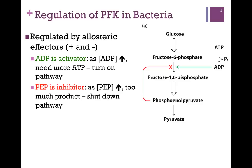You can imagine that ATP is probably an inhibitor. We also find that phosphoenolpyruvate, one of the downstream products of the pathway — the product directly in Step 9 — is an inhibitor. Remember, this is an example of feedback inhibition. As the concentration of PEP increases, it means we are producing too much product, more than we can use, and so we need to shut down the pathway. So as PEP concentration builds, it binds to PFK and inhibits its activity.